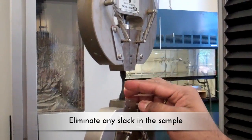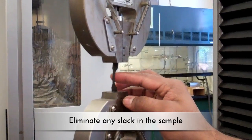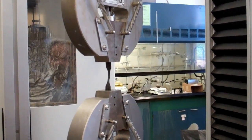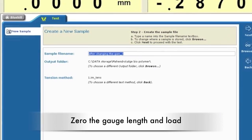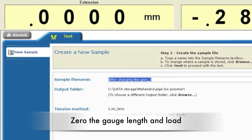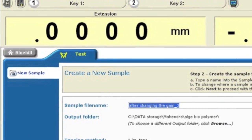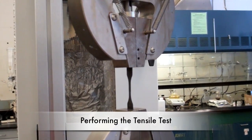The sample may have some slack between the two clamps, so additional distance should be added between the clamps using the controller. Before starting the experiment, zero the gauge length and load if they are not close to zero.